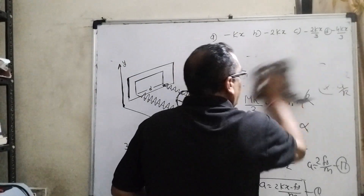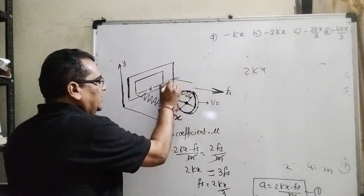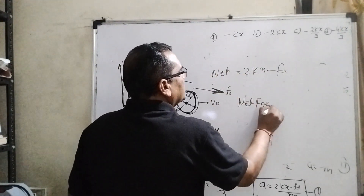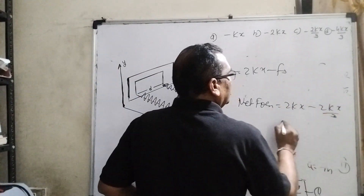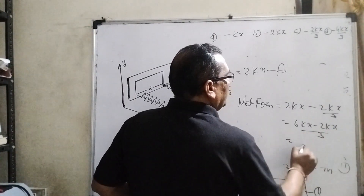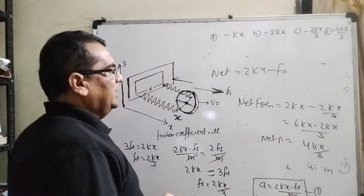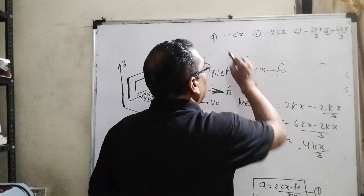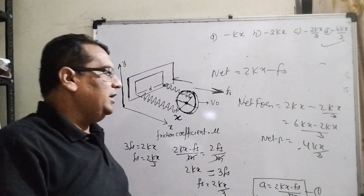We have found f_s. The net force is 2kx minus f_s, which is 2kx minus 2kx/3. That gives (6kx minus 2kx)/3 equals 4kx/3. Since the net force acts in the negative direction, the answer is minus 4kx/3. The correct option is D: minus 4kx/3.